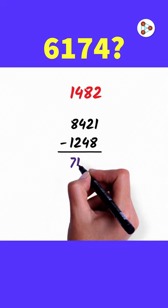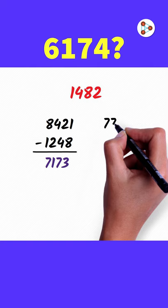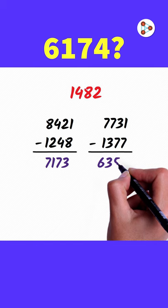Take the answer and repeat the process. We get 7731 minus 1377. We get 6354.